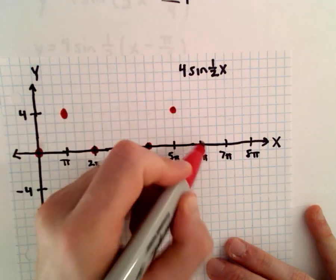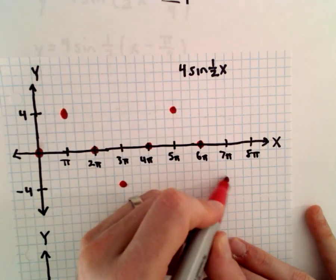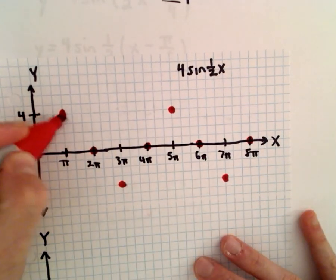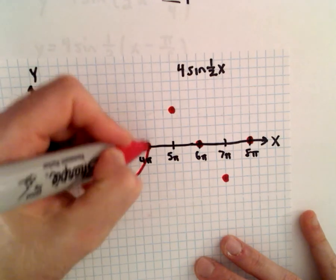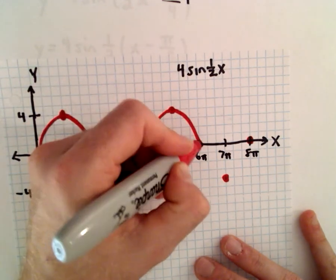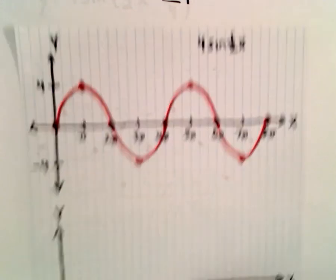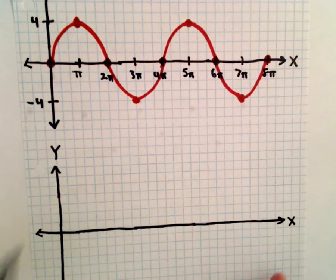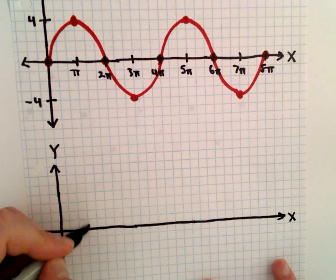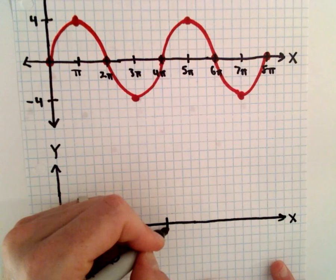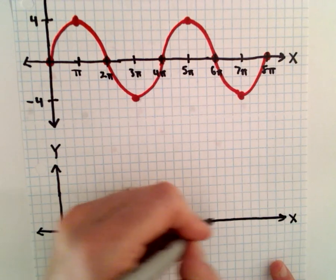At 5 pi, we'll be at positive 4. Then at 0. Then at negative 4. And then back at 0. So now all we have to do is take this graph and just shift it to the right, pi over 2 units.